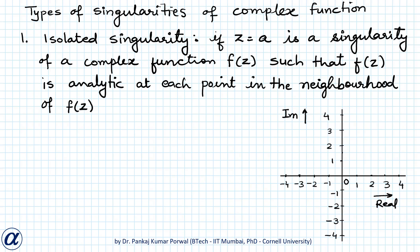In this session we will learn about types of singularities of a complex function. The first one is isolated singularity. If z equals to a is a singularity of a complex function f(z) such that f(z) is analytic at each point in the neighborhood of f(z), then such singularity is called an isolated singularity of f(z).